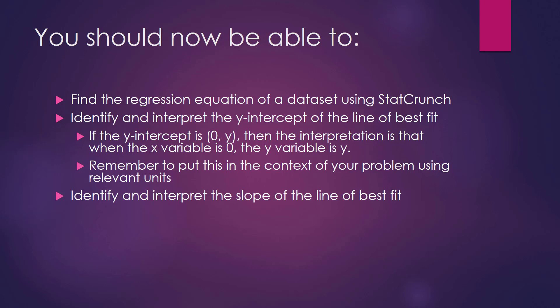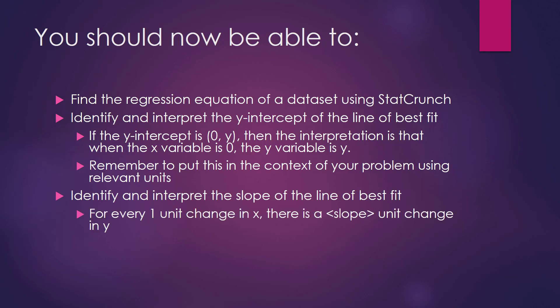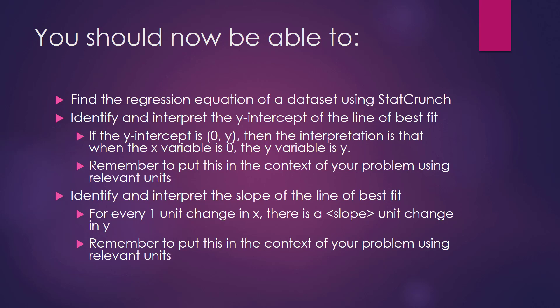At this point, you should now be able to find the regression equation of a dataset using StatCrunch, and identify and interpret the y-intercept of the line of best fit — remember, the y-intercept is (0, y), and the interpretation is that when X is 0, Y equals the y-intercept value, put into context using relevant units. You should also be able to identify and interpret the slope: for every one unit change in X, there is a slope-unit change in Y, stated in context with relevant units.